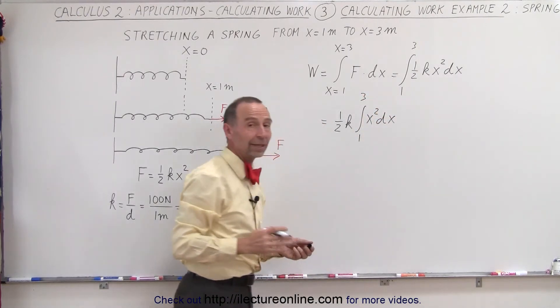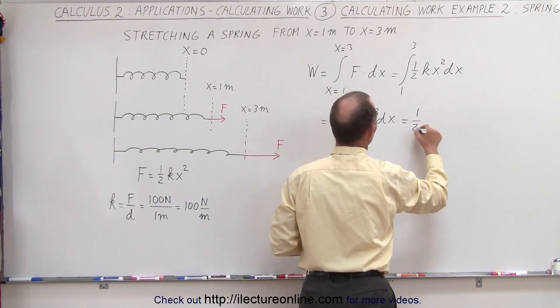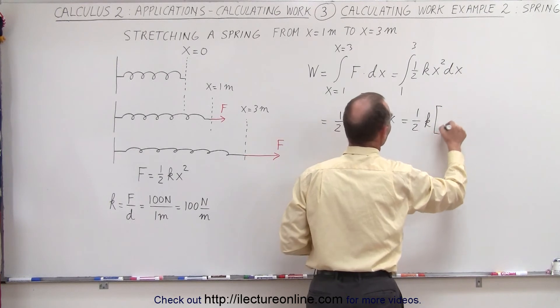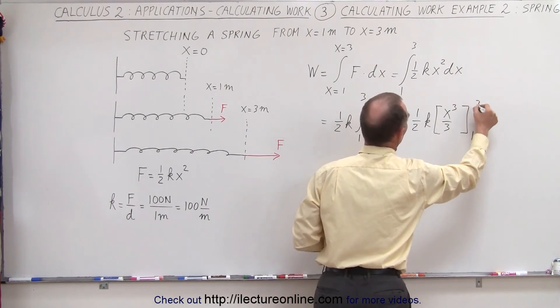So now we're able to integrate that. When we integrate x squared, we get 1 half k times x cubed over 3, evaluated from 1 to 3.